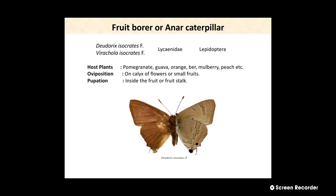The first and major pest of the pomegranate is Fruit Borer, also called the Anarch Caterpillar. There are two species: first is Deudorix isocrates and second is Virachola isocrates. Both species belong to family Lycaenidae and order Lepidoptera. When the pest belongs to order Lepidoptera, the damaging stage is always the caterpillar or larva.